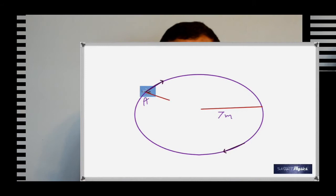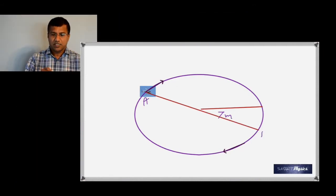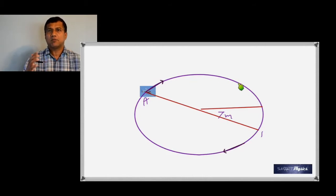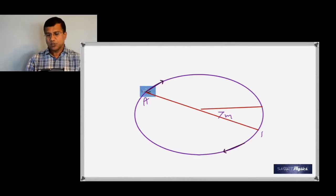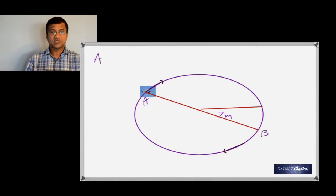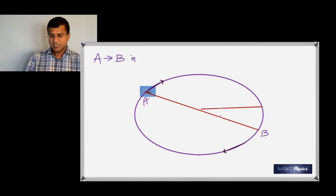Here is another example: a helicopter flying in a circular path, starting from point A and reaching point B, which is diametrically opposite. The radius of the circle is 21 meters, and it does that in 10 seconds. Find the speed.